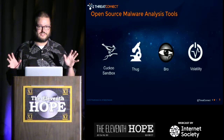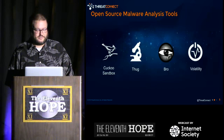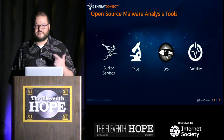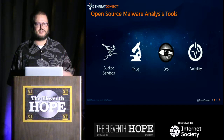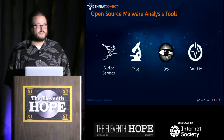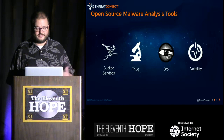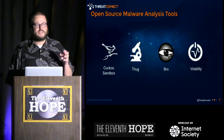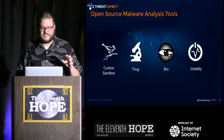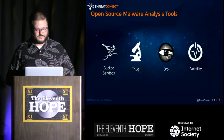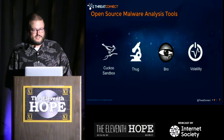For this talk, I'm only going to talk about things that are either open source or something you can log into for free. When analyzing a file, I use Cuckoo Sandbox. Thug is a low-interaction honey client that looks at and analyzes URLs — probably the least famous of these tools. Bro is a network security monitoring tool, and I'm going to talk about it as a malware analysis tool. And Volatility is a memory analysis tool.